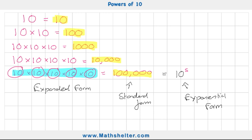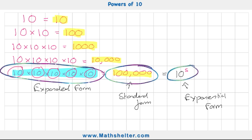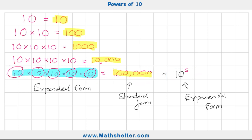All three forms are related because they have the same value. Going back up through our examples: 10 times 10 times 10 times 10 is 10 to the power of 4; 10 times 10 times 10 is 10 to the power of 3, or 10 cubed; 10 times 10 is 10 to the power of 2, or 10 squared; and 10 on its own is 10 to the power of 1. We could keep going with this as long as we wanted.